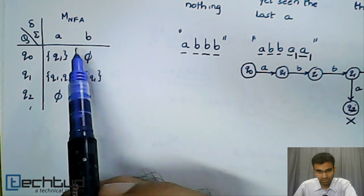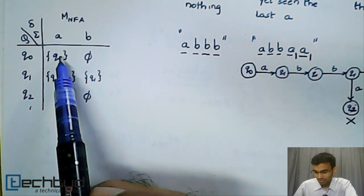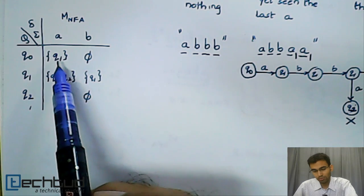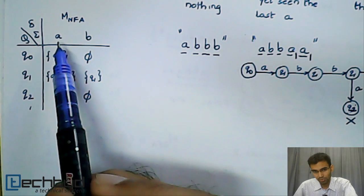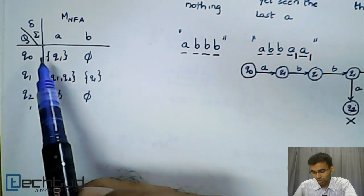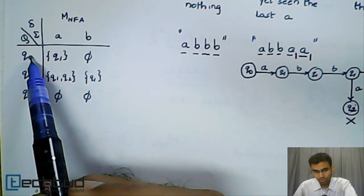Please note that in a DFA, there was no set notation because you could have only one possible next state for a particular letter in the alphabet.